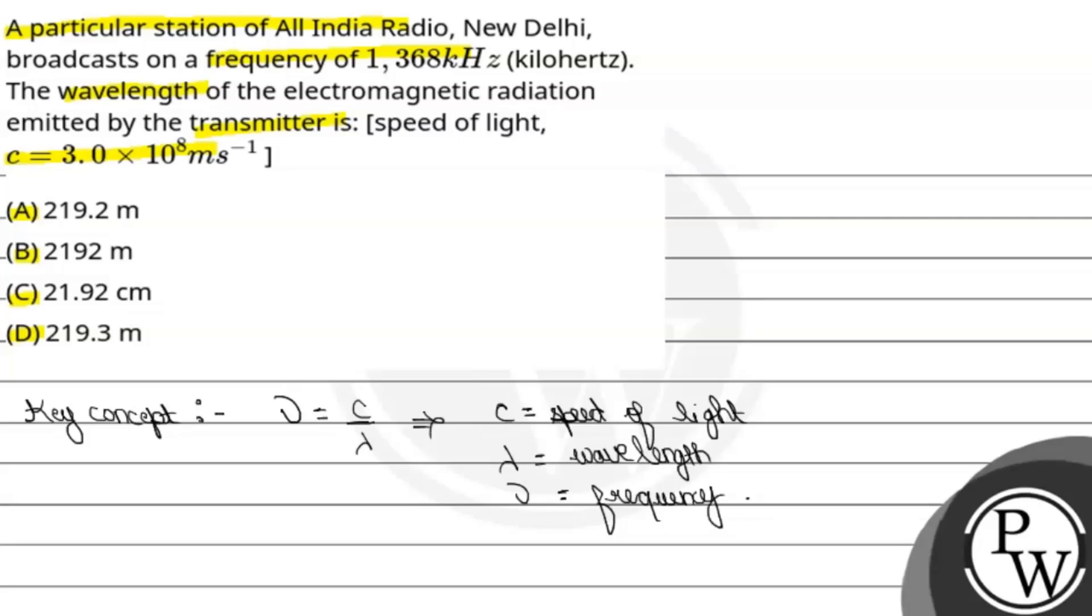In this question, we are given the frequency: ν = 1368 kHz. Let's convert this to hertz: 1368 × 10^3 Hz. Now we'll put the values in the formula.